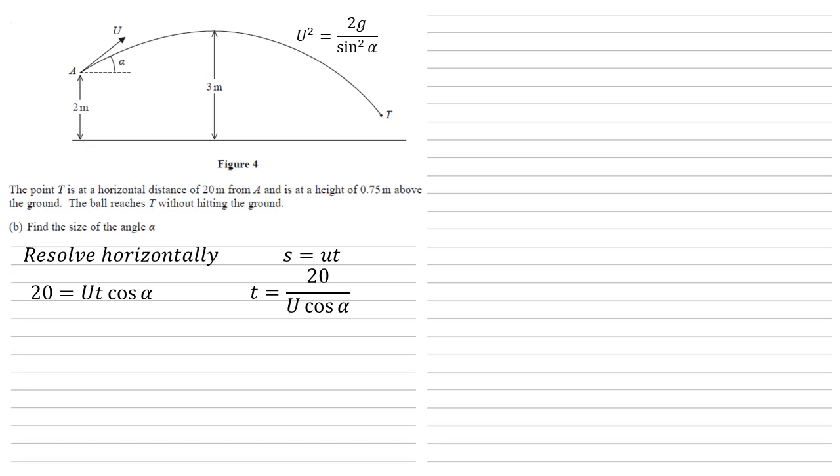We can now resolve vertically using our new value of T. So in this direction, U is equal to U sine alpha. S, the displacement, is minus 5 over 4 because the ball is going from 2 metres above ground down to 0.75 metres above ground. Acceleration is minus G, acceleration due to gravity downwards. And T, as we've just calculated, is 20 over U cos alpha.